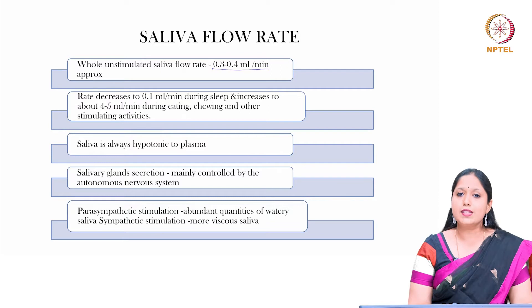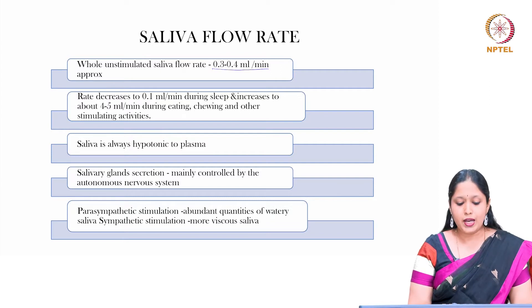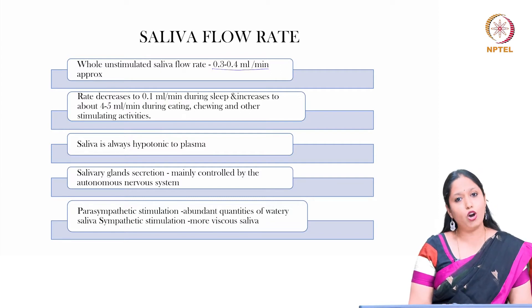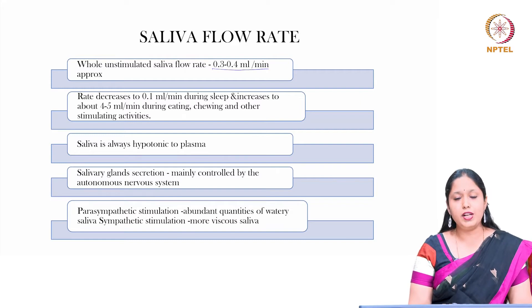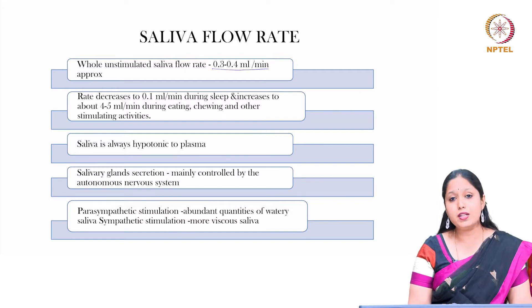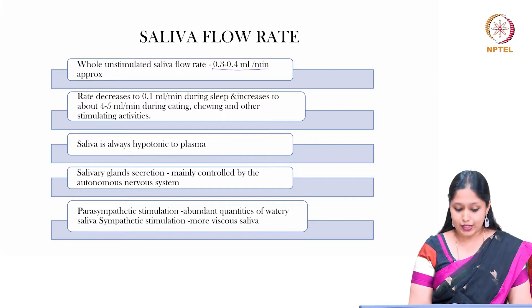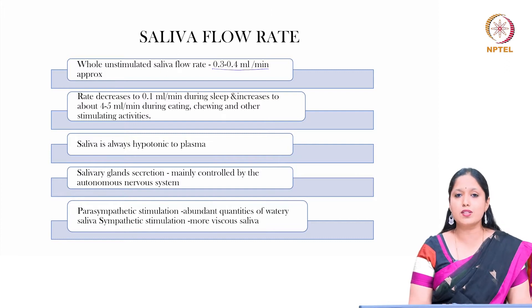Saliva is always hypotonic to plasma, and salivary gland secretion is mainly controlled by the autonomic nervous system. Parasympathetic stimulation causes abundant quantities of watery saliva, whereas sympathetic stimulation causes more viscous saliva.